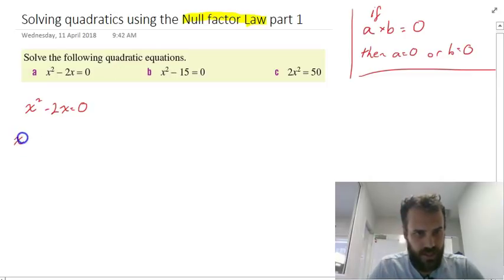We can say that x is the common factor. x times x makes x², and x times -2 makes -2x equals zero.